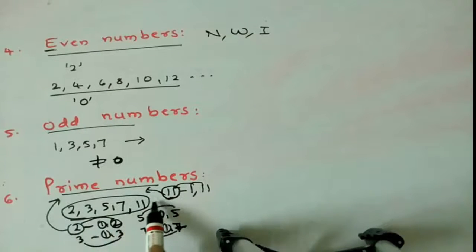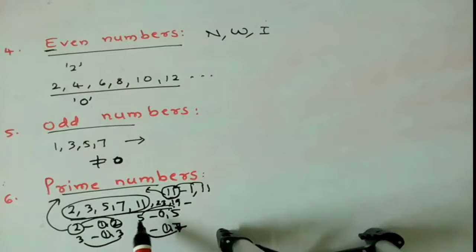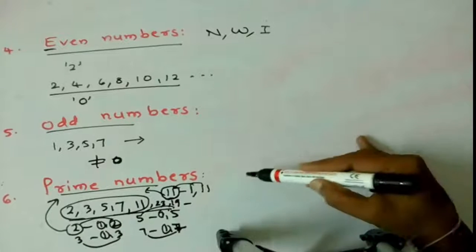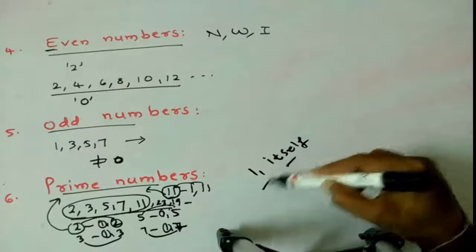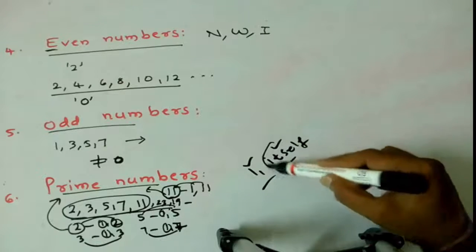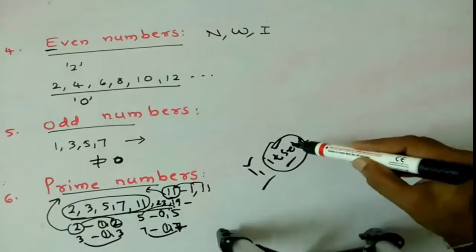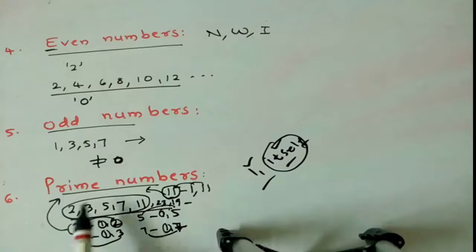Like that, 2, 3, 5, 7, 11, 23, 19. These are all prime numbers. What is the main factor here? Divisor should be 1 and itself. The number only itself will be the divisor for that number. This is the prime number concept.